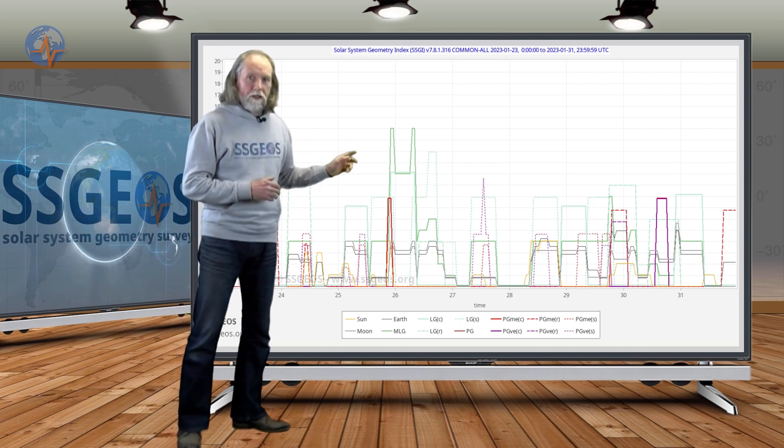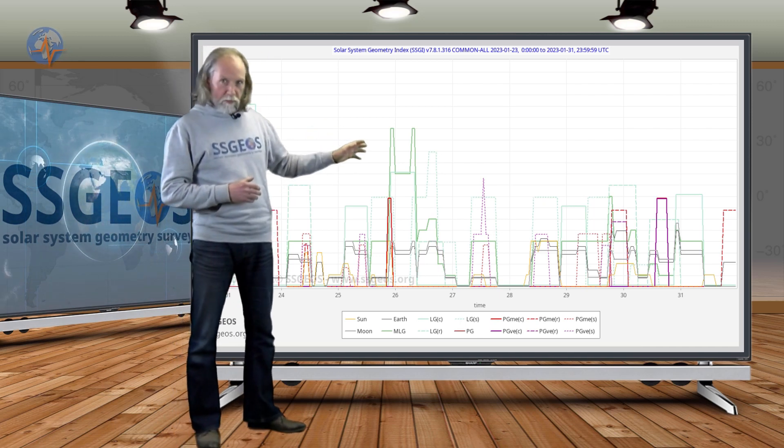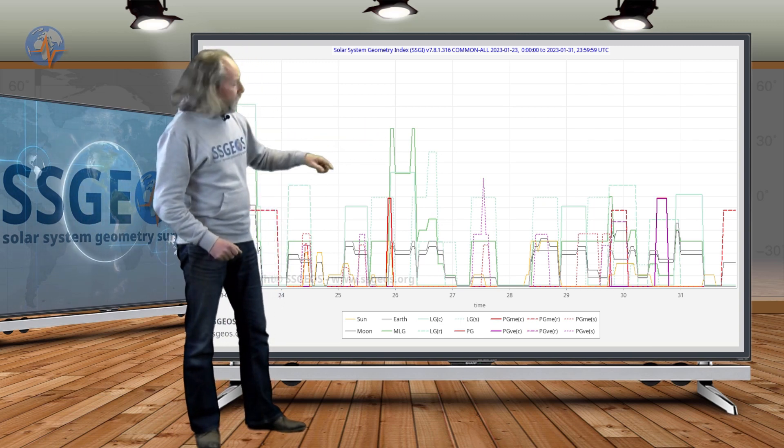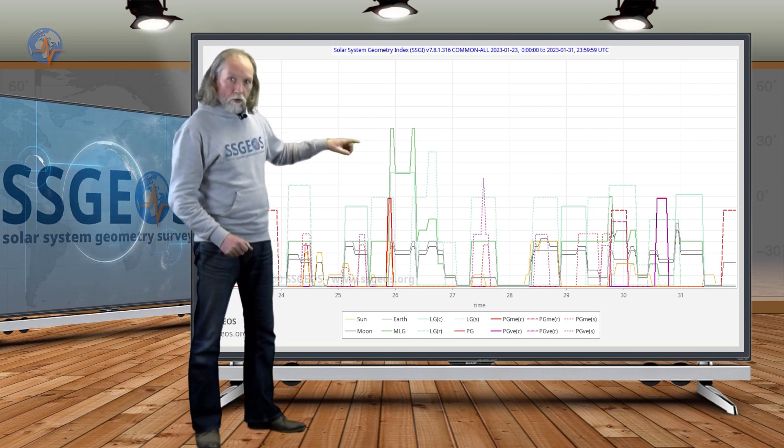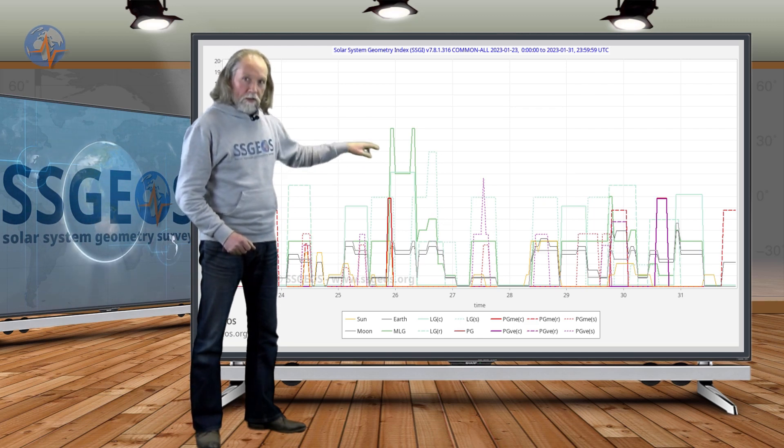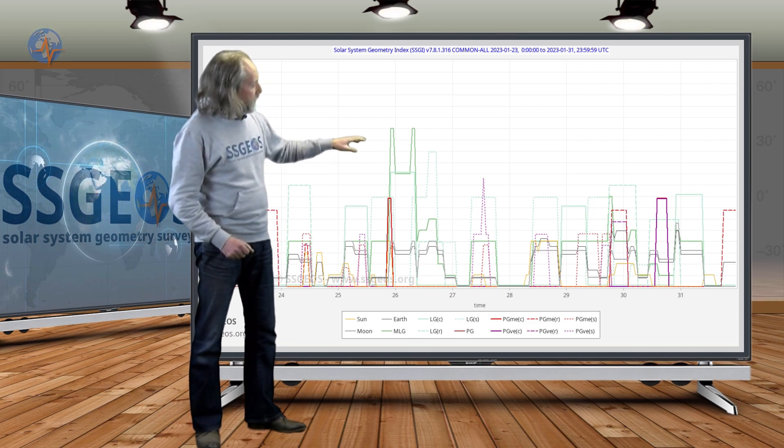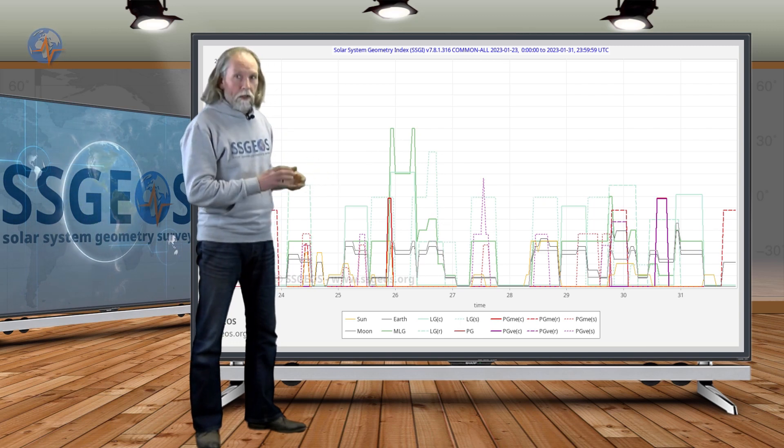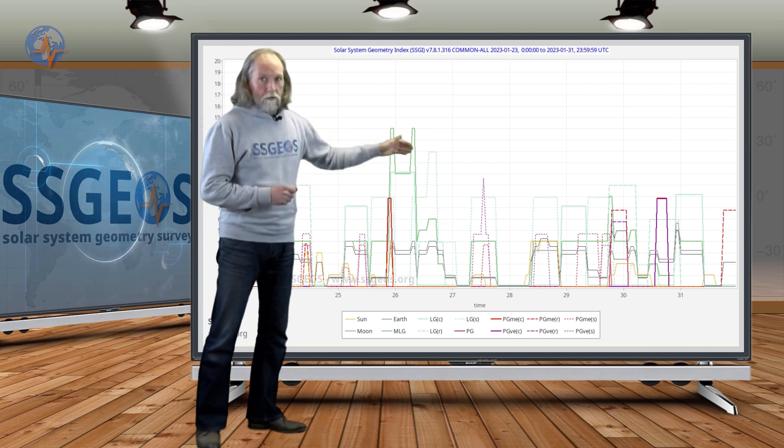So my estimate is that we may see additional stronger seismic activity in the next two days, following the planetary and lunar geometry on the 25th-26th. And this could be low six or mid six magnitude most likely, maybe a bit larger tomorrow or the day after.